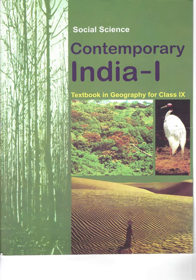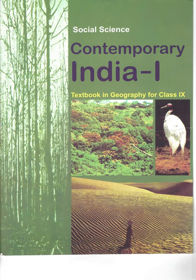The outermost range of Himalayas is called the Shivaliks. They extend over a width of 10 to 15 km and have an altitude varying between 900 and 1100 meters. These ranges are composed of unconsolidated sediments brought down by rivers from the main Himalayan ranges located further north. These valleys are covered with thick gravel and alluvium. Longitudinal valleys lying between Lesser Himalayas and the Shivaliks are known as Duns, like Dehra Dun, Kotli Dun and Patli Dun are some of the well-known Duns.